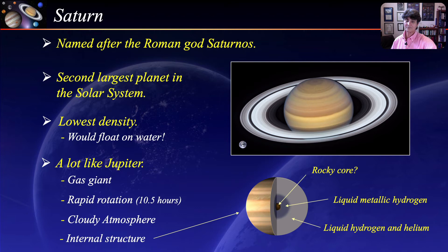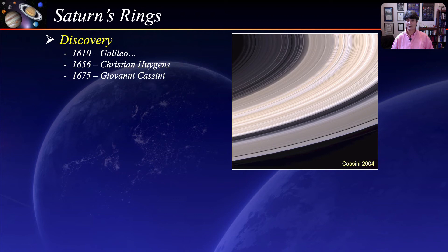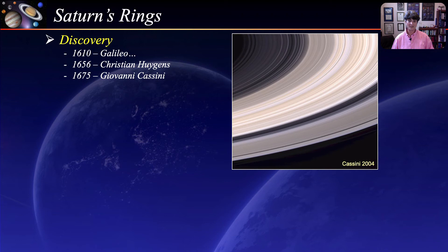The most interesting and distinctive feature of Saturn is its magnificent rings. This very detailed image was taken by the Cassini spacecraft in 2004. The rings were first observed by Galileo in 1610, but he was unable to identify them as rings — they appeared as bulges, which he once called the ears of Saturn. In 1656, the Dutch astronomer, physicist, and mathematician Christian Huygens was the first person to suggest that Saturn was surrounded by a thin flat ring. About 20 years later, as telescopic resolution continued to improve, the Italian astronomer Giovanni Cassini determined that the ring was actually composed of smaller rings with gaps between them. The largest of these gaps was later called the Cassini Division.